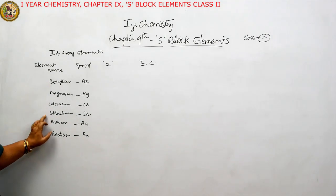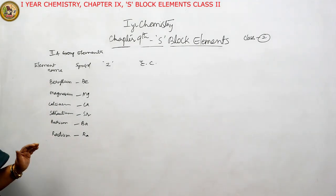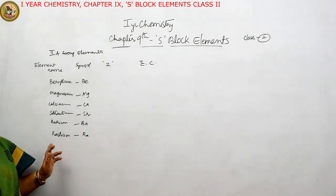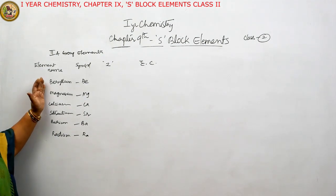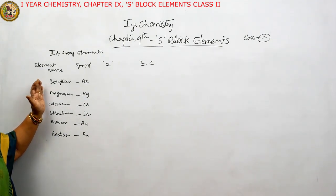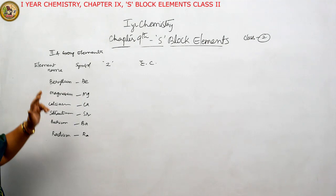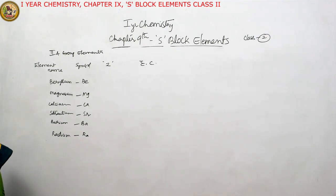Counting them: 1, 2, 3, 4, 5, 6 — these are the six elements present in second group. The last element, radium, is the radioactive element. We shall discuss the physical properties and chemical properties of these elements in second group. The another name given to second group elements is alkaline earth metals.